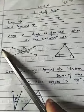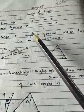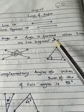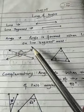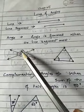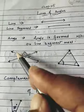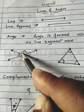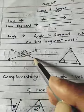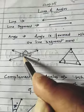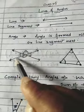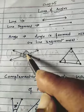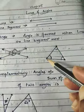Number three: Angle. An angle is formed when lines or line segments meet. When two lines meet, they form angles. See these two lines meeting here — they form angles with two arms. When two lines intersect at one point, four angles are formed.